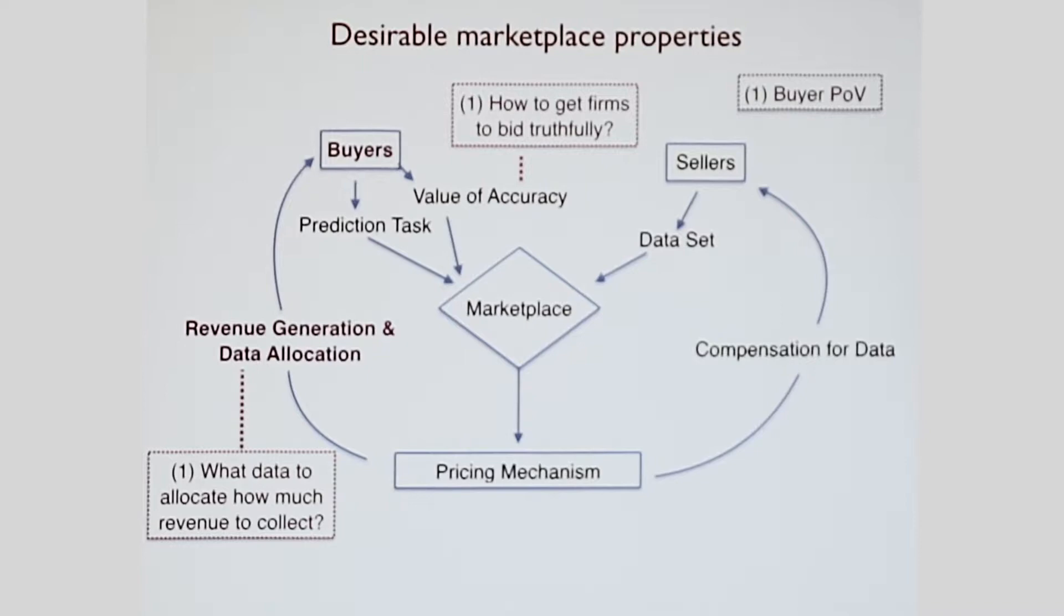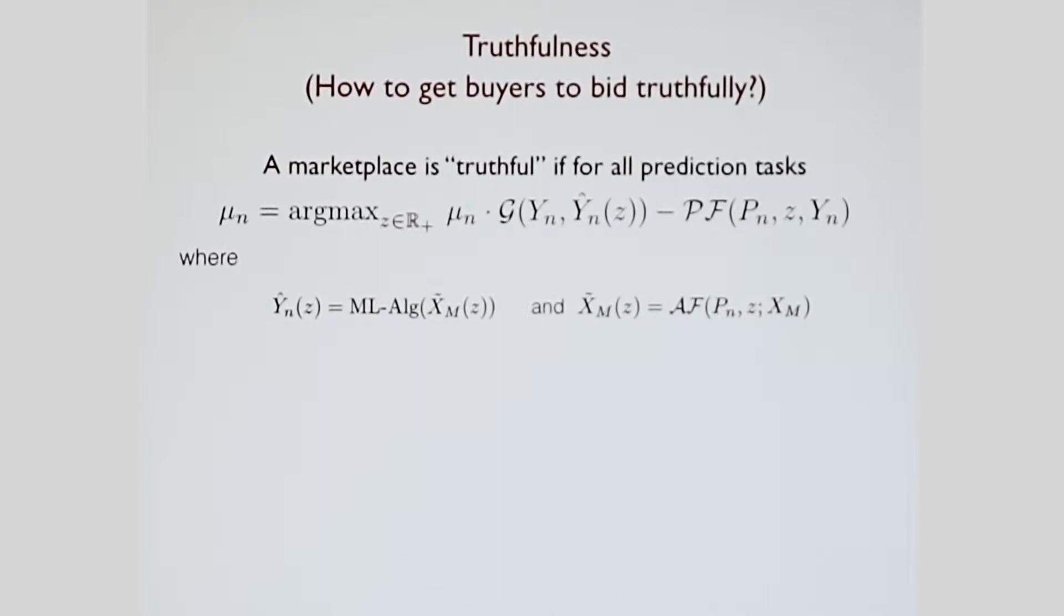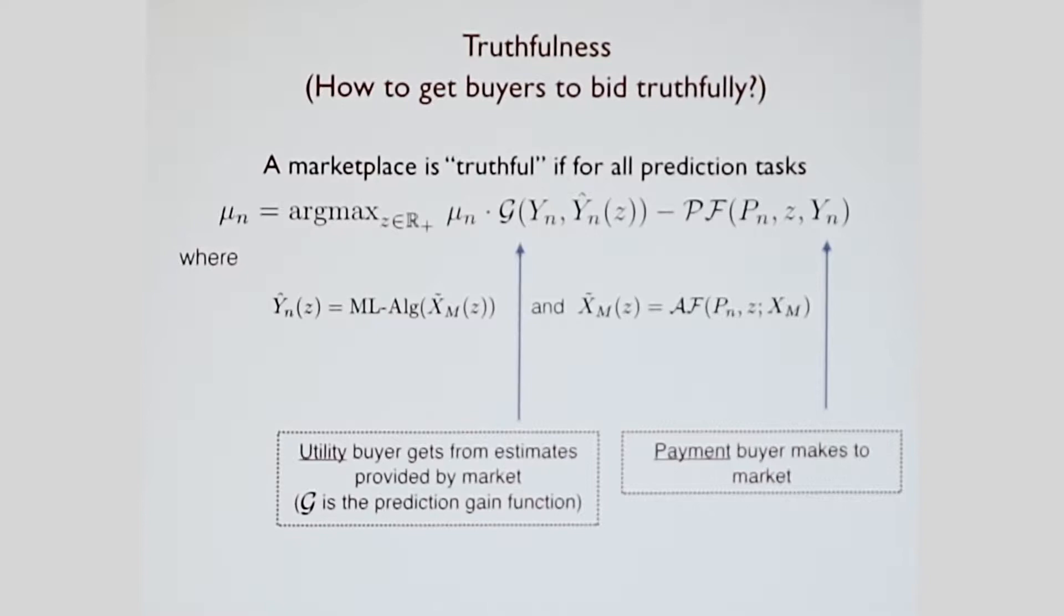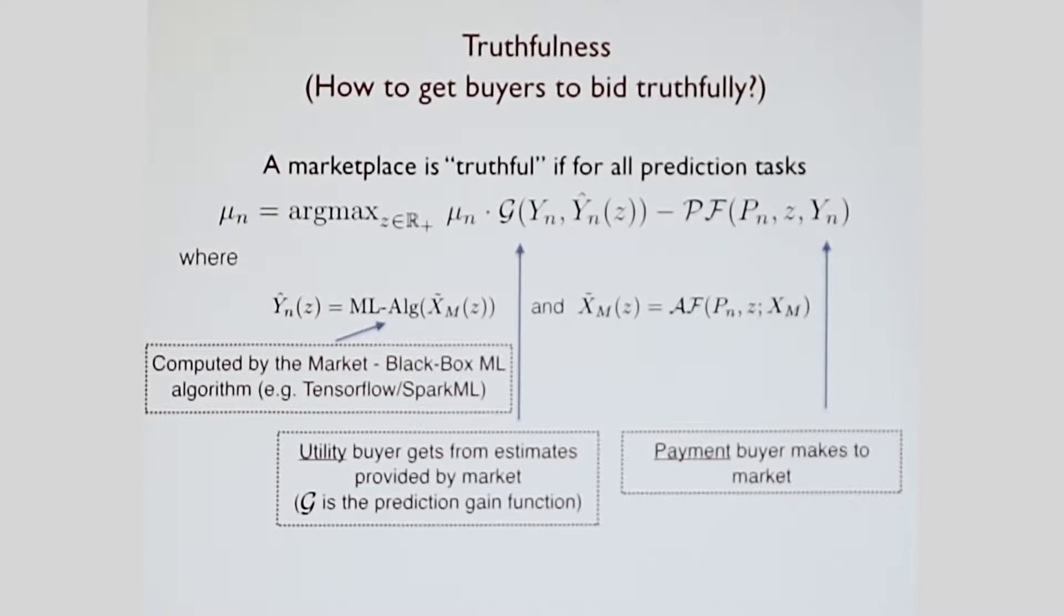We're going to start with the buyer's point of view, which is how do they get firms to bid truthfully? The definition of truthful is extremely standard. The first term is the utility the buyer gets from estimates provided by the market. G is the prediction gain function, like your RMSE or 1 minus RMSE. Y hat n is the estimates provided by the machine learning algorithm based on the features that were allocated. The features that were allocated are a function of the bid and the current price and the original features. The second is the payment function, which is the payment made by the buyer to the market. This market is going to be truthful if buyers are incentivized to bid truthfully if that maximizes the net utility, the utility minus their payment. An important point is that the machine learning algorithm is computed by the market, not private to the buyer.